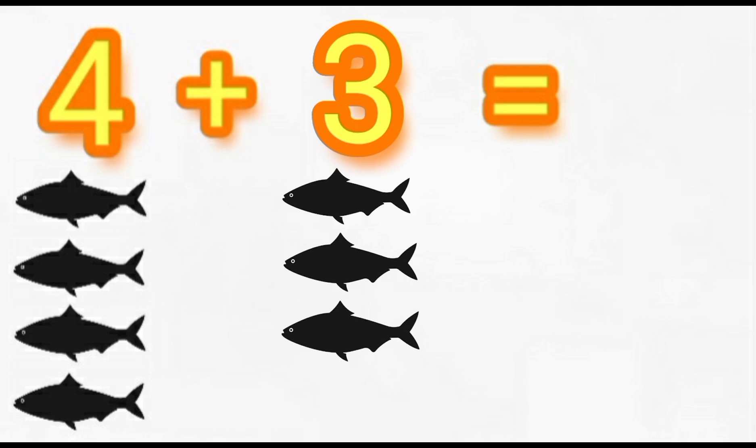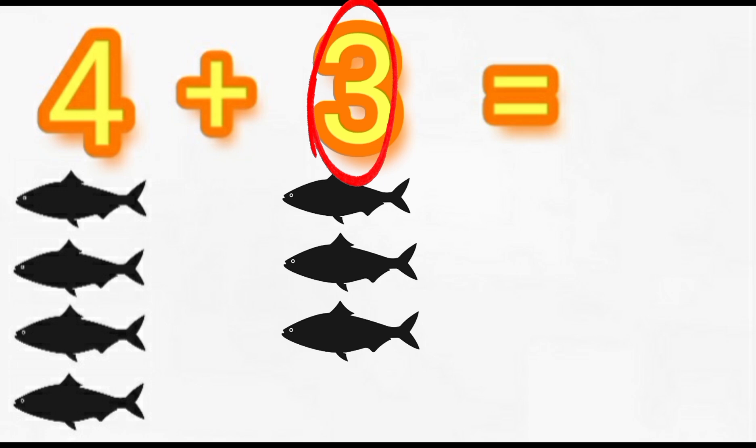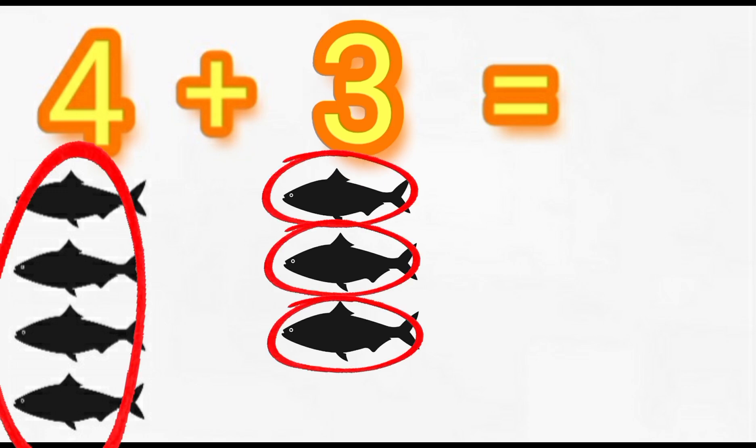And to get the answer, we count all of them together. So we start with four, and then we add three. Four. Five. Six. Seven. The answer is seven.